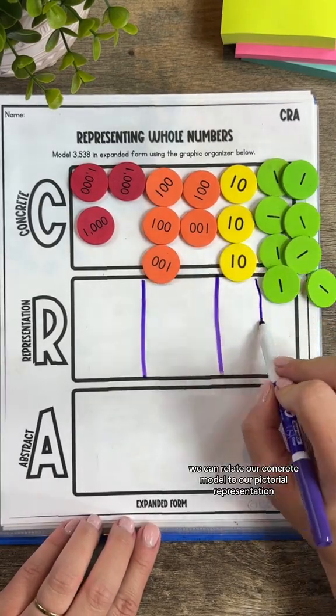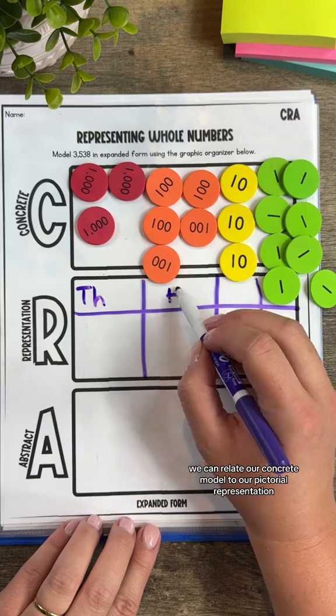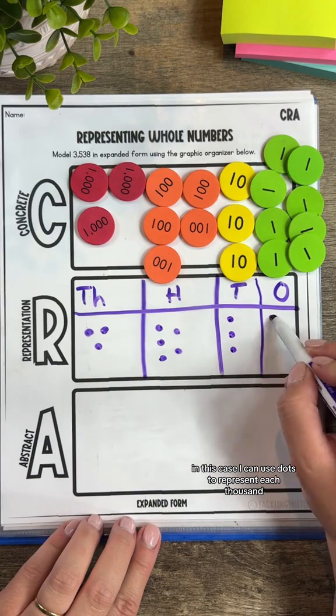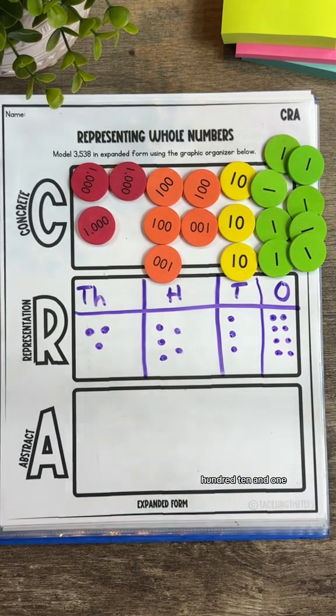We can relate our concrete model to our pictorial representation by using a place value chart. In this case, I can use dots to represent each thousand, hundred, ten, and one.